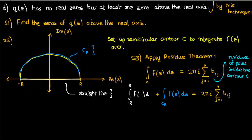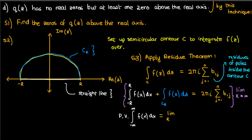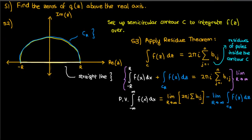If we replace z in the first integral by the real number x, and then take the limit of the entire equation as capital R approaches infinity, we find that the first integral becomes the principal value of the integral of f of x over an infinite interval, according to the definition of the principal value. This equals the limit of 2πi times the sum of the residues of f of z, minus the limit of the integral of f of z over the semicircular contour.